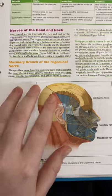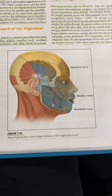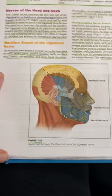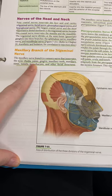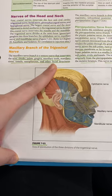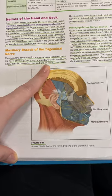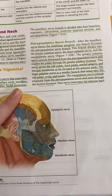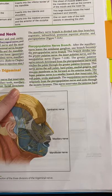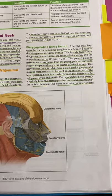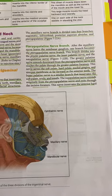For the maxillary branch of the trigeminal nerve — you can see more in figure 7-21 — it innervates the nose, cheeks, palate, gingiva, maxillary teeth, the maxillary sinus, tonsils, nasopharynx, and other facial structures. It's divided into four branches: the zygomatic, infraorbital, posterior superior alveolar, and pterygopalatine.